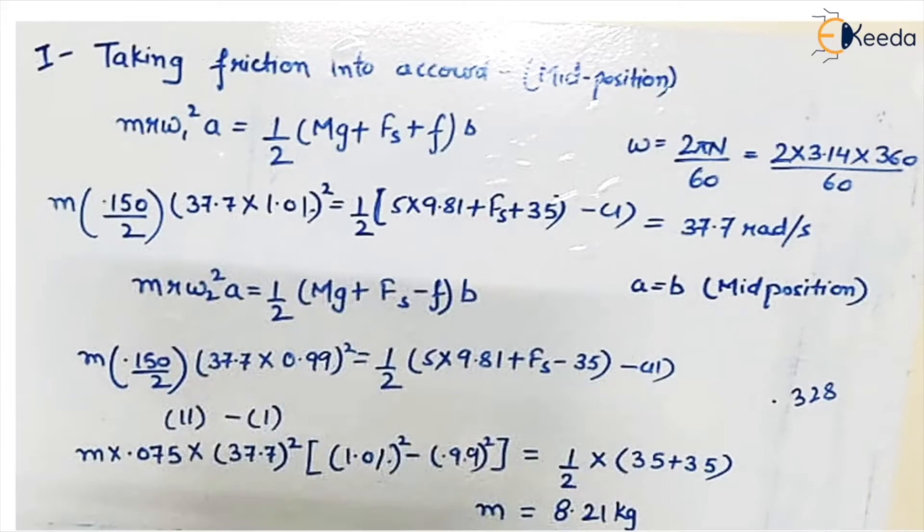Omega is given as 2πN upon 60. We can calculate it. N is given in the question and the first case says 1% change. So when increment is there, it is 1.01 of the speed that is given for the mid position equals half. Capital M is given, G is given, spring force is not given, and frictional force is given. Now because this is mid position, A and B they both are same, so we have not used the terms A and B. So we will get one equation.